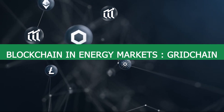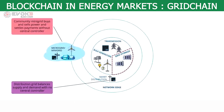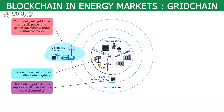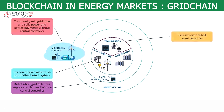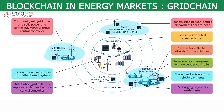Blockchain in energy markets. Blockchain facilitates secure transactions of power between individuals on a distributed network who do not have an existing relationship. The grid is based on an open-source, cryptographically secure, decentralized application. All energy transactions are logged. Prosumers generate power beyond their needs and feed it into the grid using blockchain. Smart contracts automate agreed trading relationships, making commercial transactions more orderable and improving trust. Carbon tax is collected directly from appliances with home energy management.